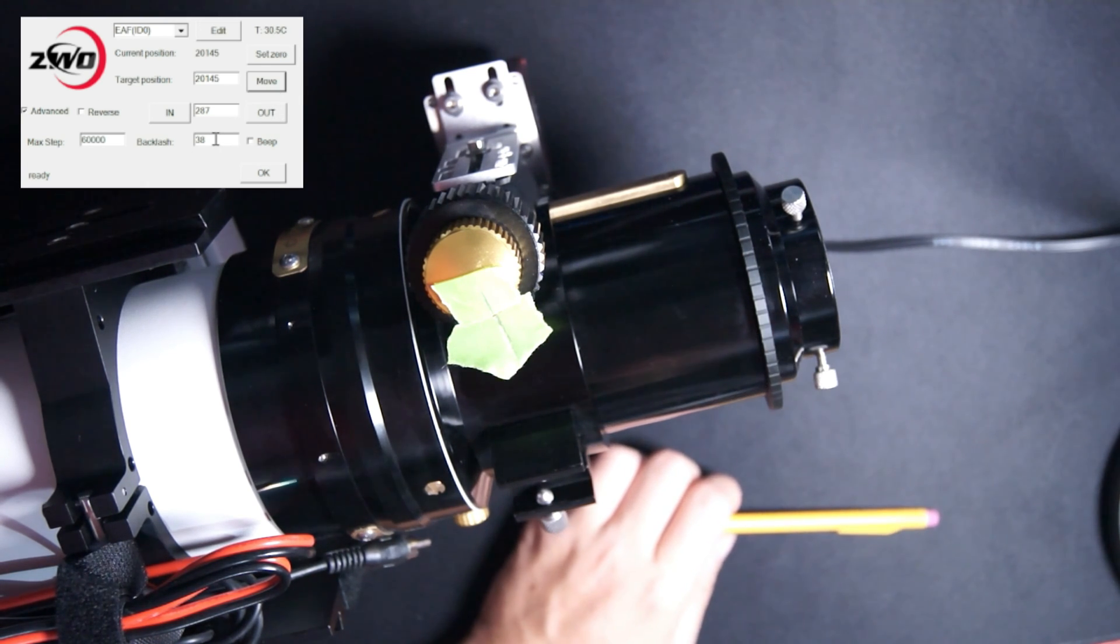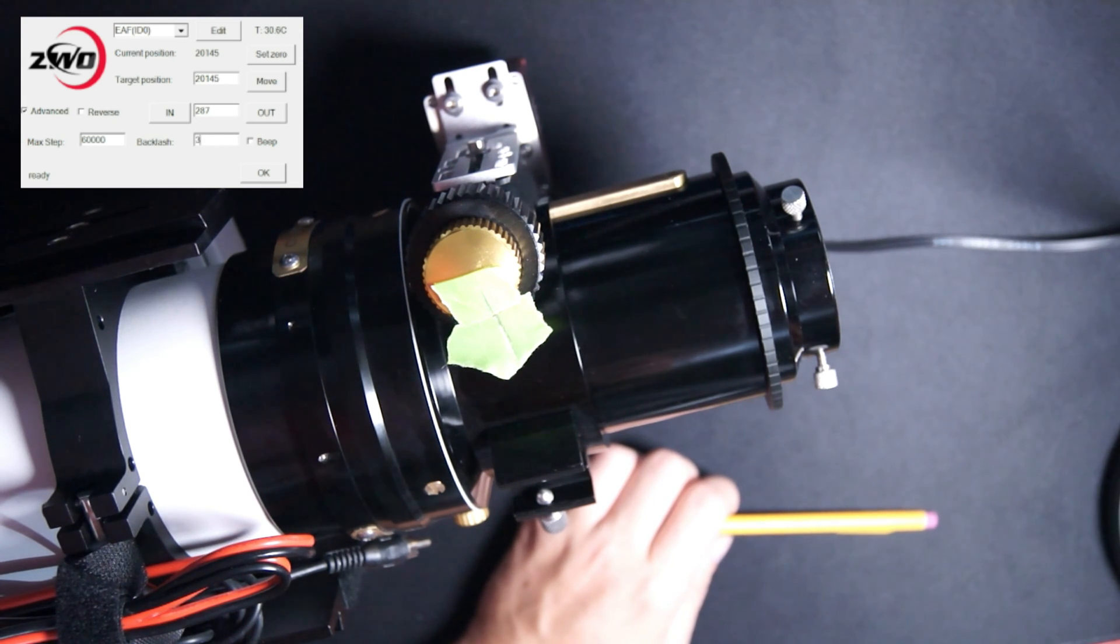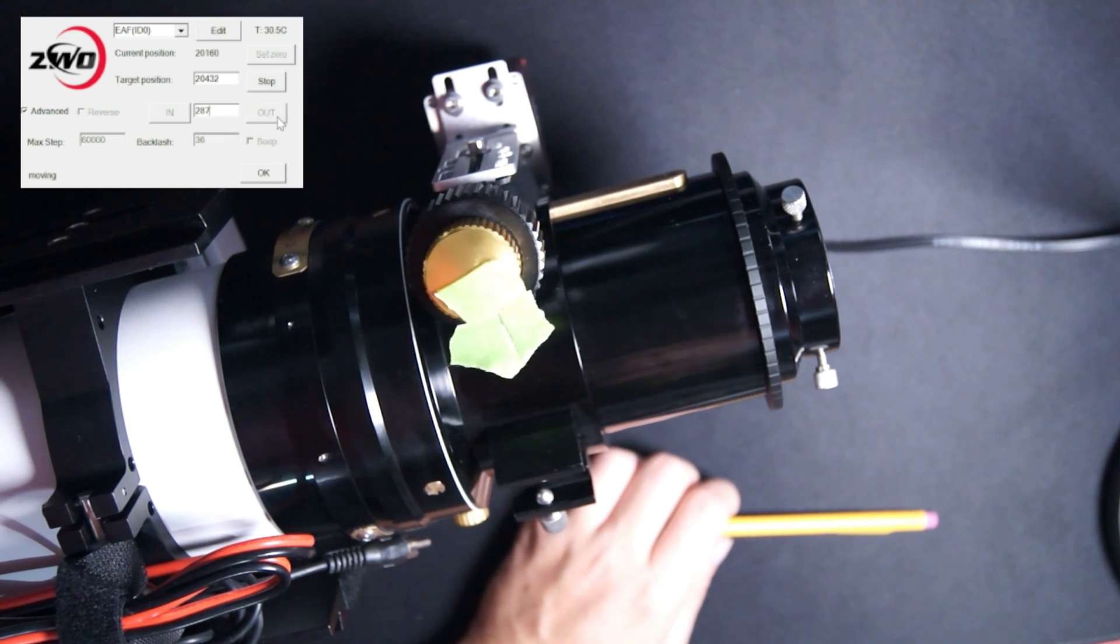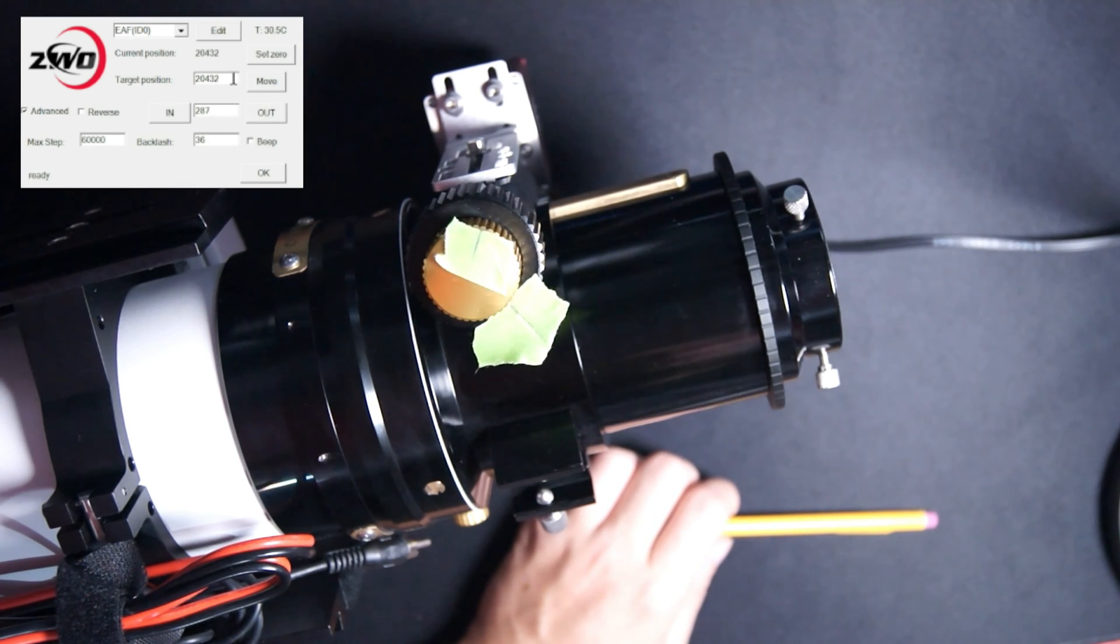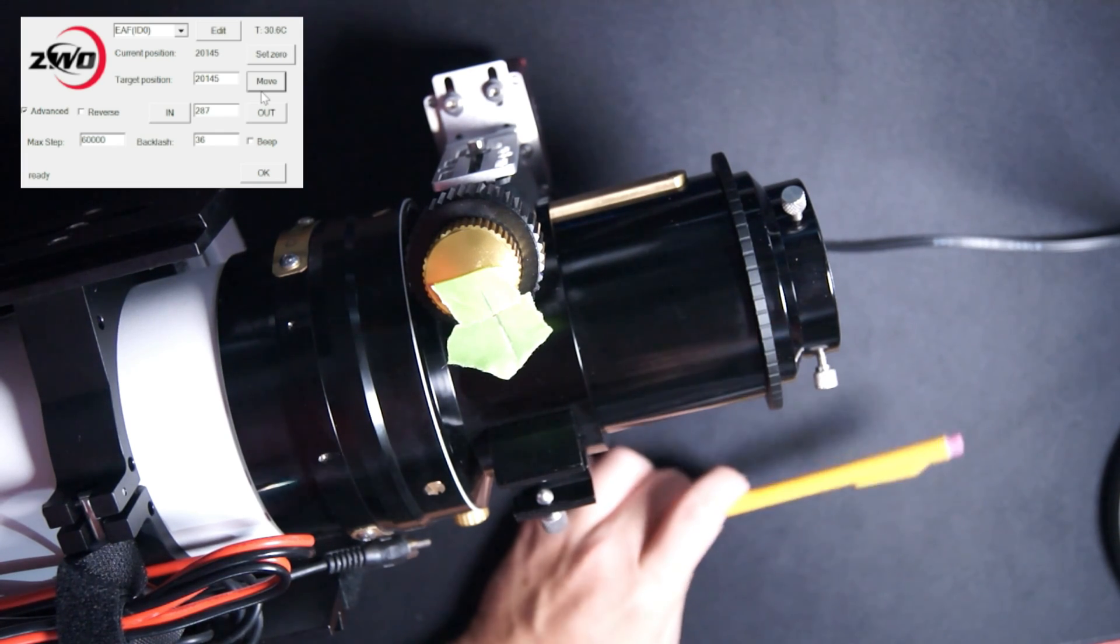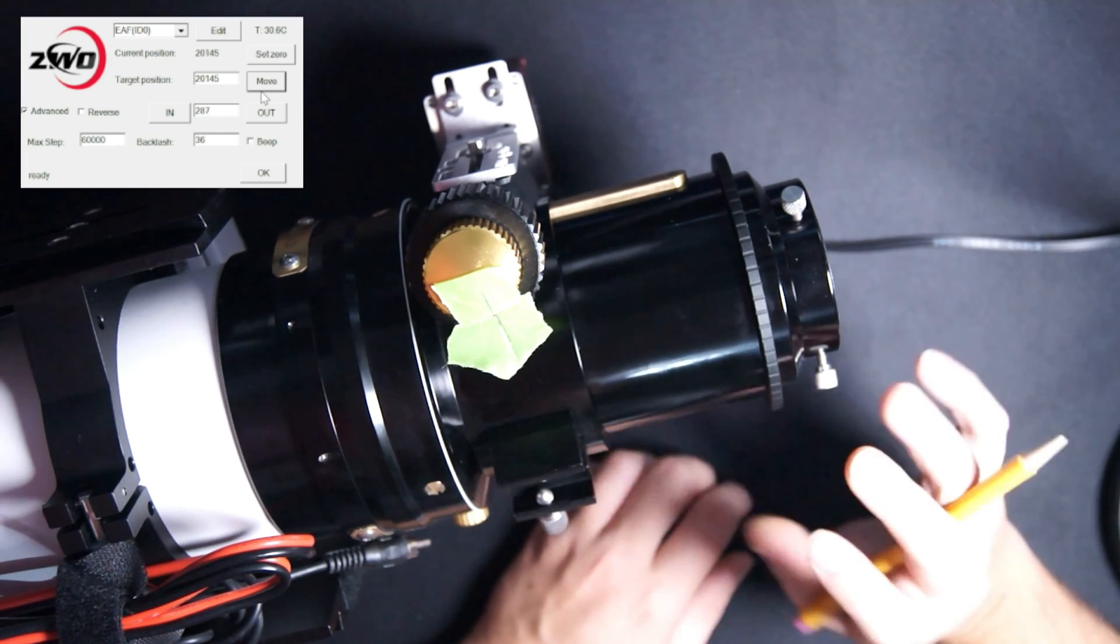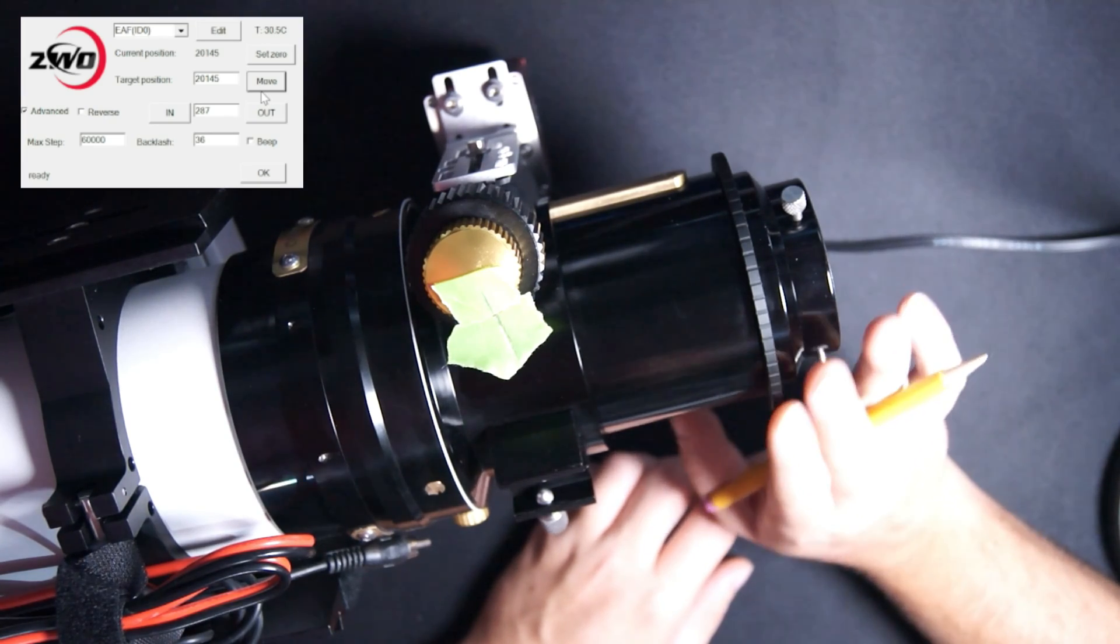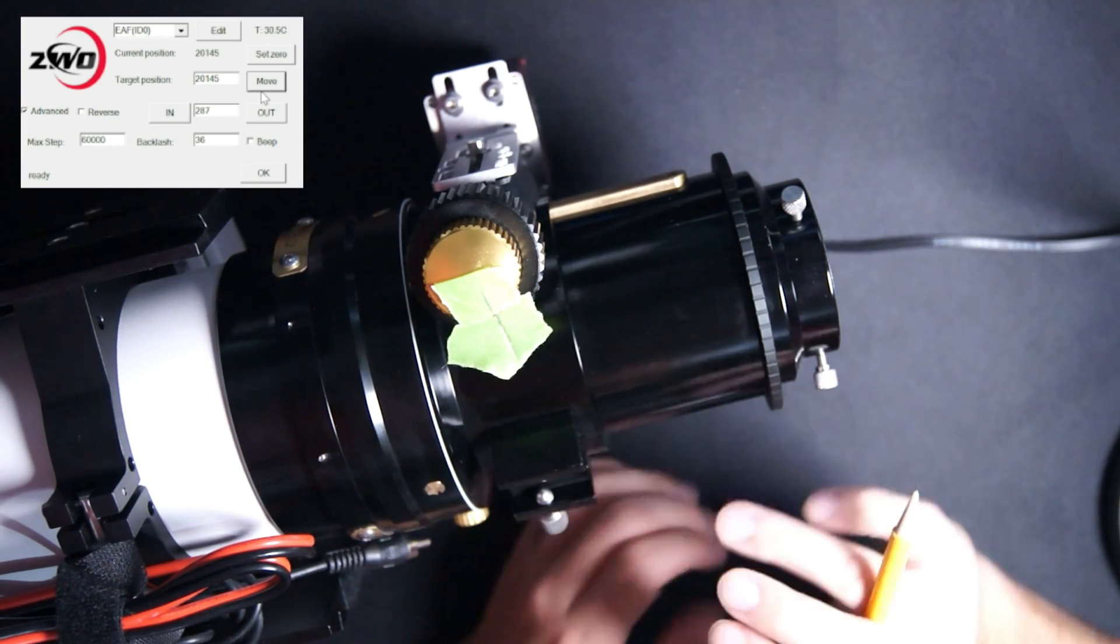It still might be overshooting a little bit. So we're going to try dropping this down to 36. And we're going to repeat the process once again, move it out and then move it back to our starting position. And that's looking better. So for now, I'm going to leave it at 36 steps for the backlash compensation.